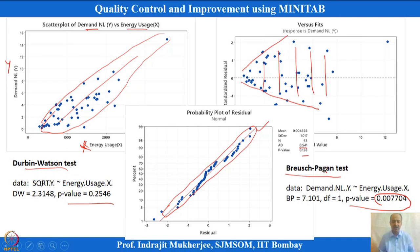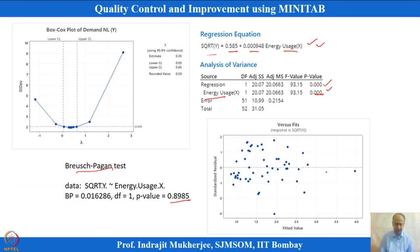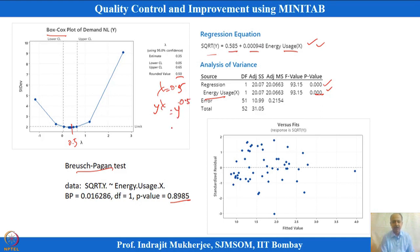Since heteroscedasticity is present, the model cannot be generalized and we need to correct it. A Box-Cox transformation is applied, which indicates a lambda value of approximately 0.05, rounded to 0.5. Lambda equals 0.5 means we apply y to the power of 0.5, which is simply the square root of y. So the transformed model will be: square root of y as a function of x.